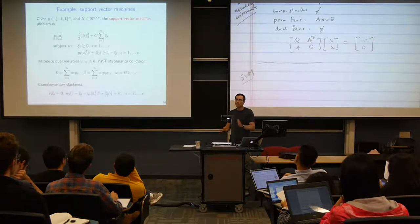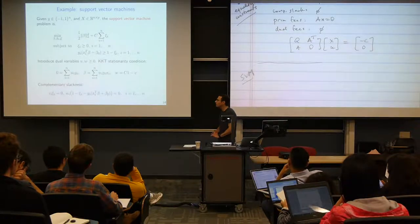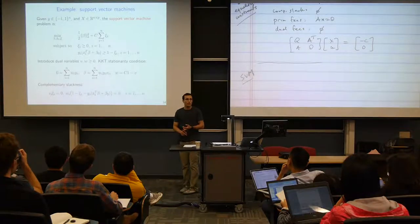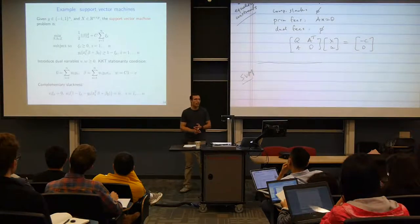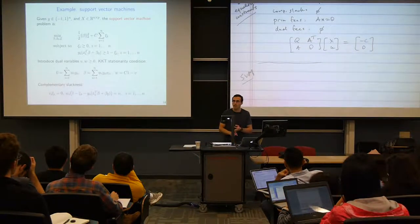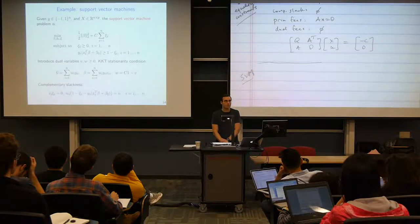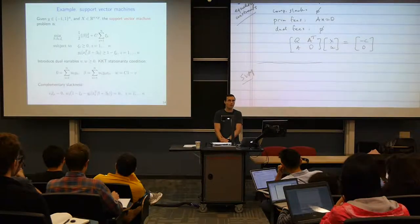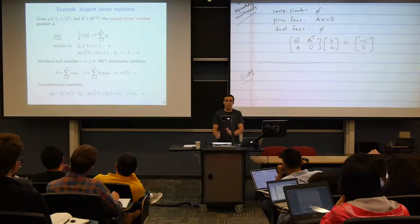First, let's note that this is a convex problem. It has all affine inequalities and equalities, and therefore strong duality must hold. Because strong duality holds, the KKT conditions are necessary and sufficient for optimality.